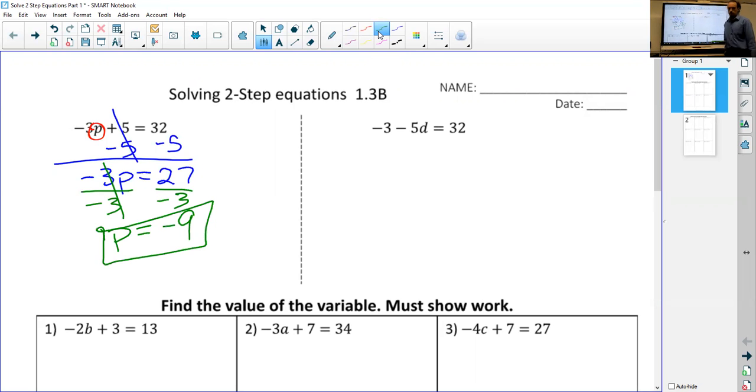Same as with one step, we can go back. We can substitute this value into the original equation just to make sure it's right. So we can say negative three times negative nine plus five. Does that equal 32? Negative three times negative nine is positive 27. 27 plus five is 32. This checks out.